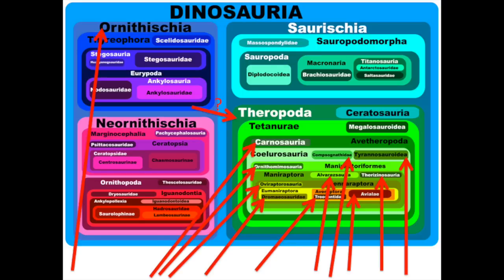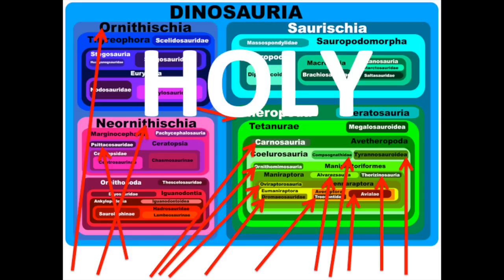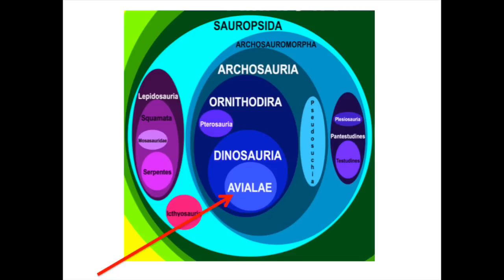We've got feathers in a basal ornithischian — the group not containing birds. We've got some protofeathers in Kulindadromaeus, which is a neornithischian, so it's not even a basal member of that group — definitely not the group with birds. And then we have Psittacosaurus with quills on its tail. Psittacosaurus is definitely not a theropod. So I guess we're moving our protofeather arrow from Avilae to Dinosauria, since both basic groups of dinosaurs — even though one doesn't have birds in it — had feathers. This means protofeathers were more likely than not an ancestral condition for Dinosauria, and any scaled dinosaurs got their scales secondarily.